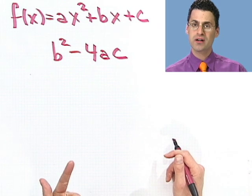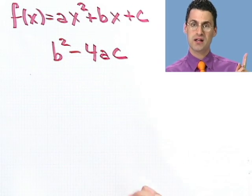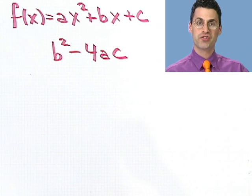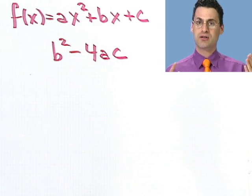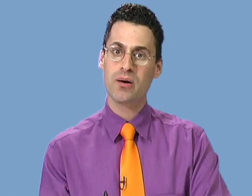If that equals 0, then I'm going to have in the formula negative b plus or minus 0. Well, that means there's only one real root because I have plus or minus 0. So if this number were to be 0, then I know I only have one real root, only one x-intercept.